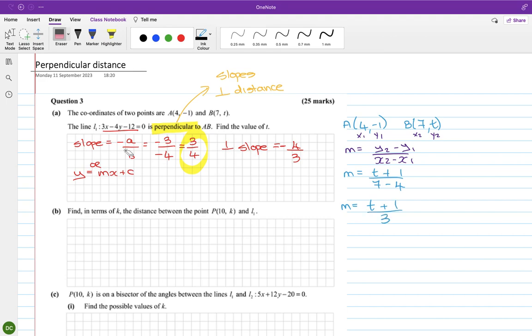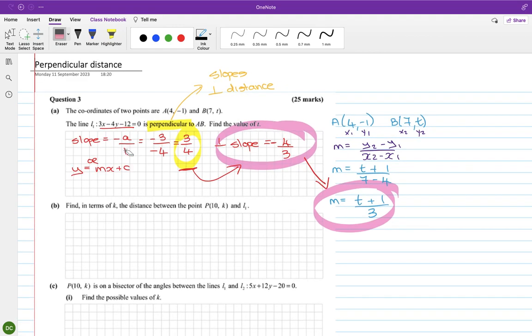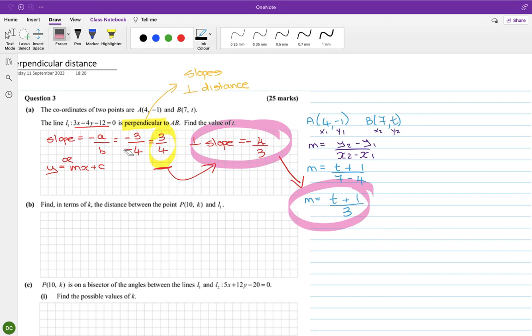And this should be the same as this. So if they're perpendicular to each other, then I got the slope, I made the perpendicular slope, which means that should be the slope of that. So I think (t+1)/3 should equal minus 4/3.